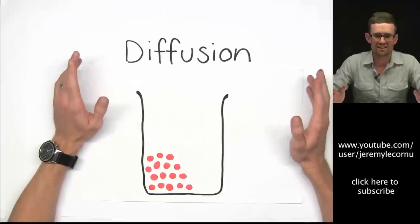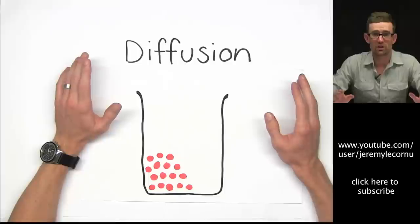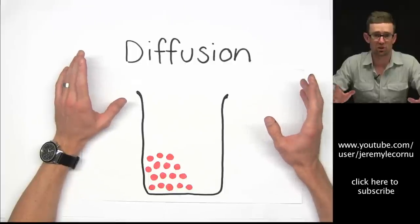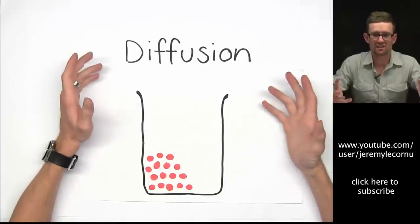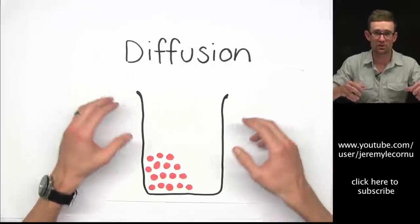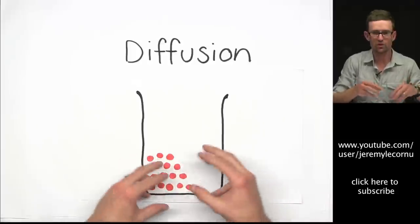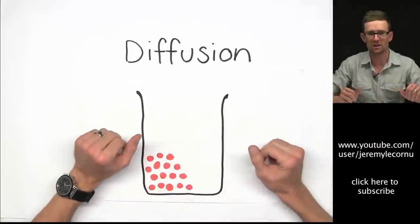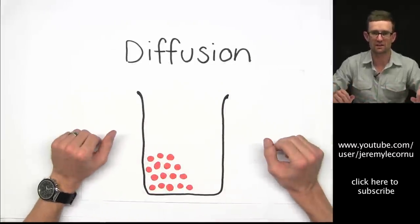Hi everyone. In this lesson, I'm going to tell you about diffusion and what it is. Basically, in simple terms, diffusion is where particles move from where there's lots of them to where there's not many of them until they're evenly dispersed.